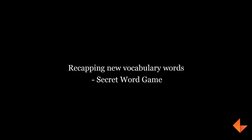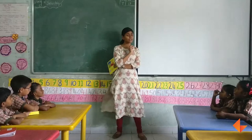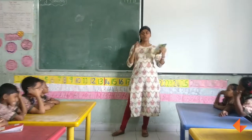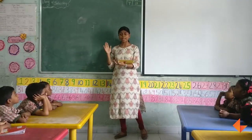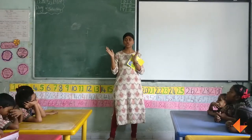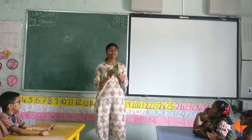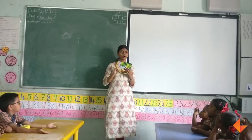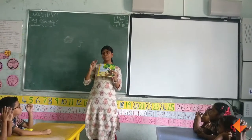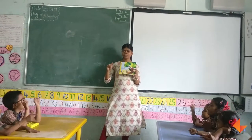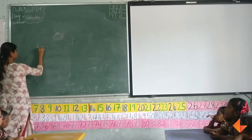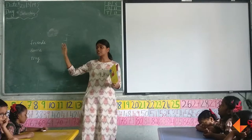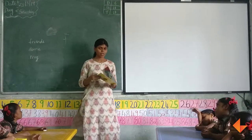I am going to play a game and the name of the game is called Secret Game. I will tell you some words from this story and you have to remember those words. When I keep reading the story, if you hear that word you should clap one time. The secret words are: Some, Friends, My. When I am reading the story you should clap — Some, Friends, My. Repeat the words: Some, Friends, My.